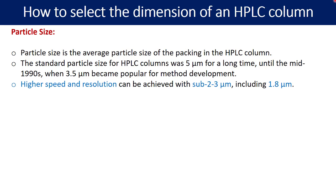Higher speed and resolution can be achieved with sub 2 to 3 micron including 1.8 micron particle size. So what is the relationship between resolution and particle size? It is inversely proportional. The column with smaller particle size will result into higher resolution. In case if you want to have faster chromatography, you should choose the smaller particle size.